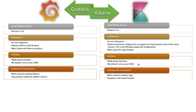Kibana is all about log analysis. If you have an application and all the logs are written to a log file, you can ingest all those logs into Elasticsearch, run Kibana on top of it, and use Kibana to analyze and query all the logs. For example, if you want to find how many times an error has occurred in a log file, you can do that kind of analytics using Kibana — whereas in Grafana you cannot.